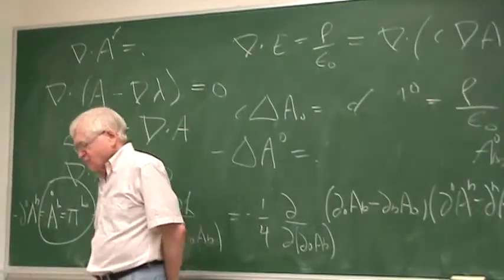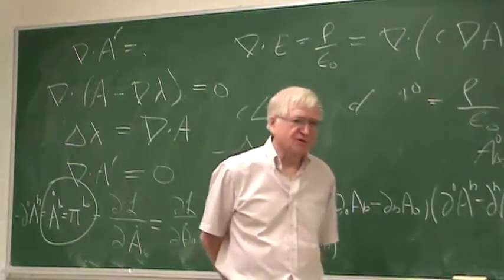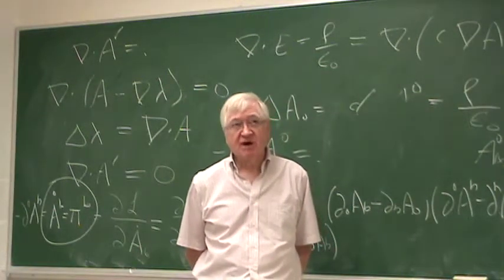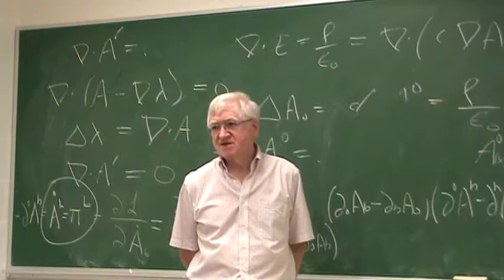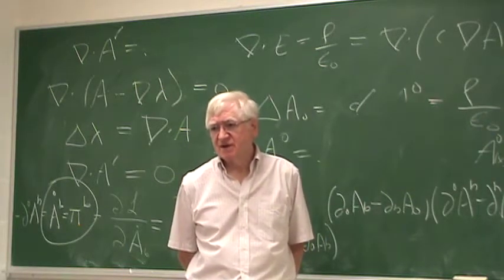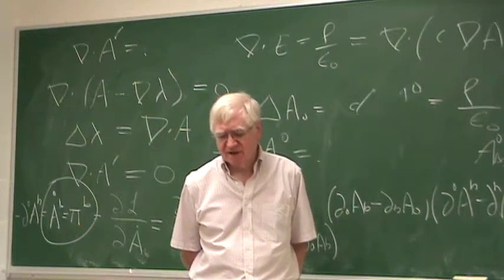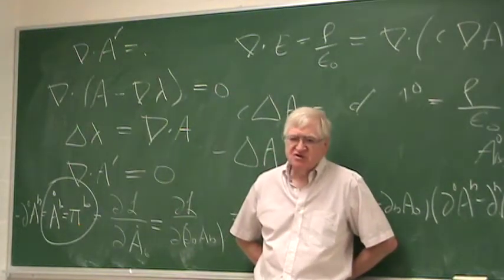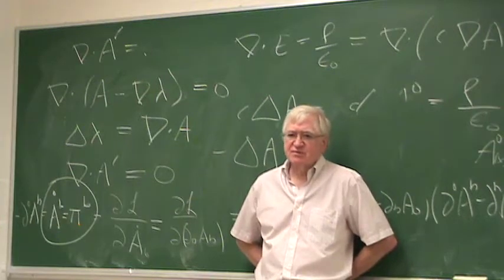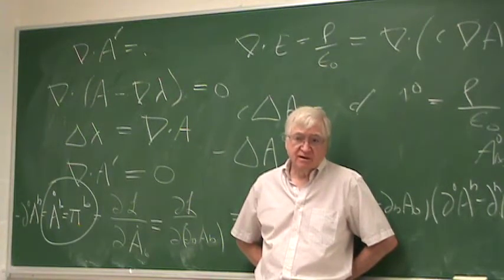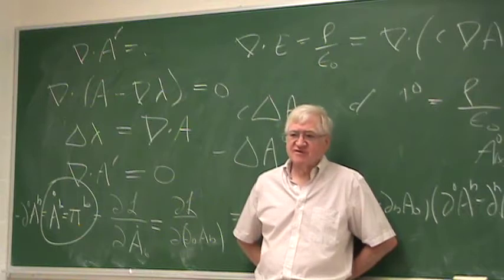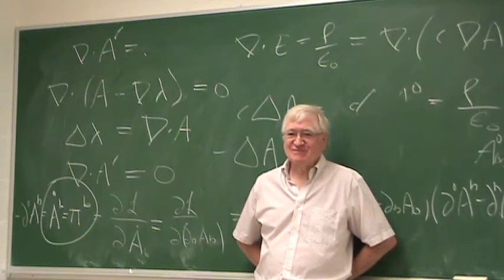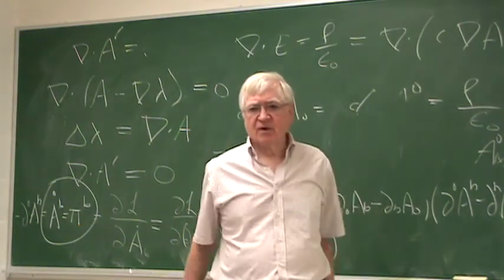The problem of quantizing transverse fields was worked out by Dirac using what are called Dirac brackets. If you want the detailed discussion, it's in chapters seven and eight of Weinberg's book Quantum Field Theory, Volume One. I propose we skip the Dirac brackets and just go to the answer. All right, we're over time, let's stop here.